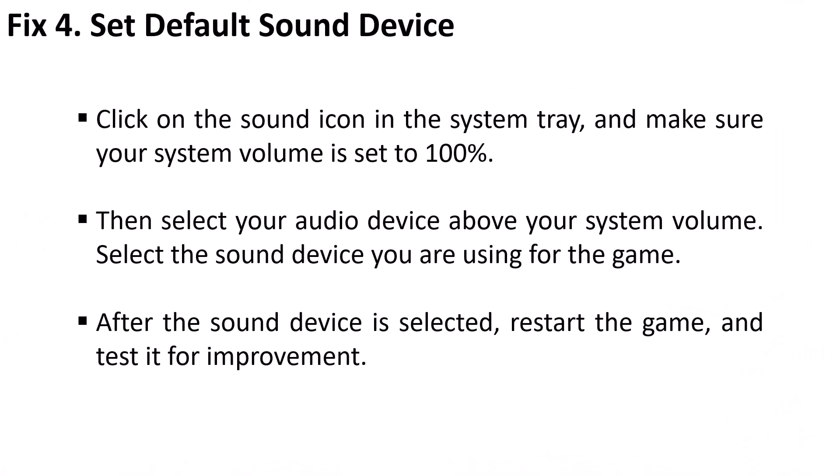Fix 4: Set Default Sound Device. Click on the sound icon in the system tray and make sure your system volume is set to 100 percent. Then select your audio device above your system volume — select the sound device you are using for the game. After the sound device is selected, restart the game and test it for improvement.